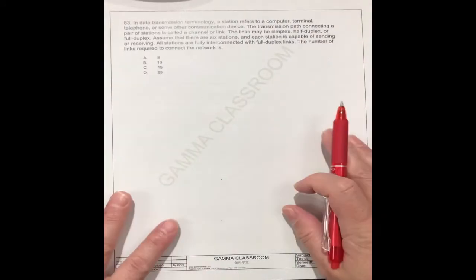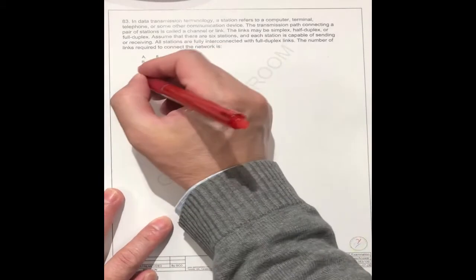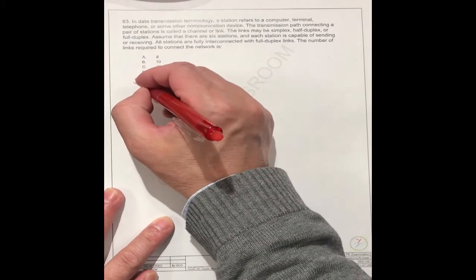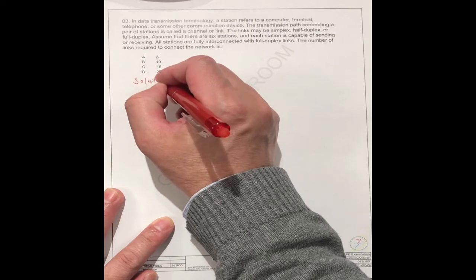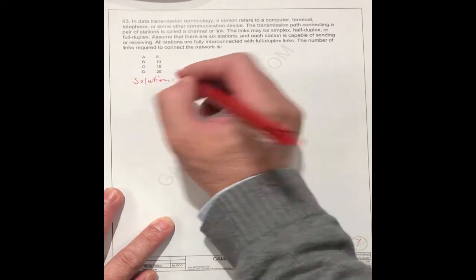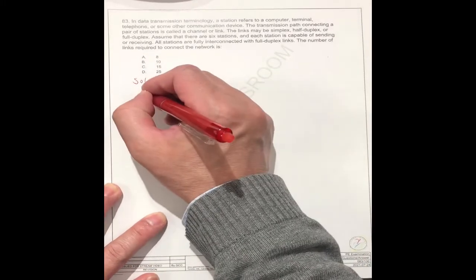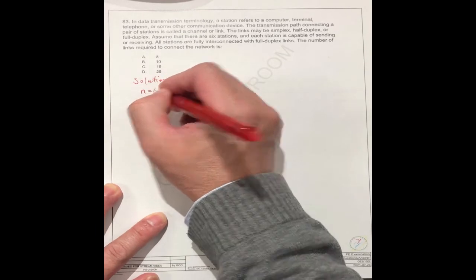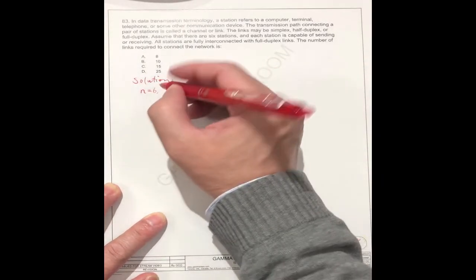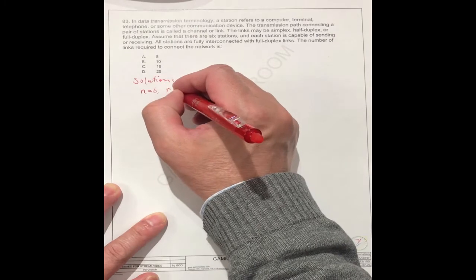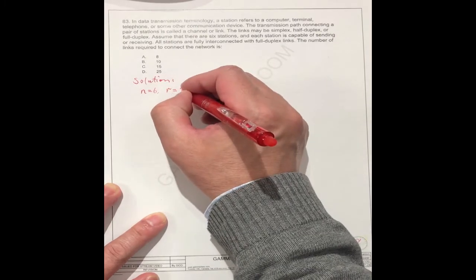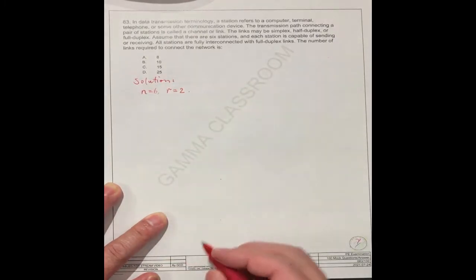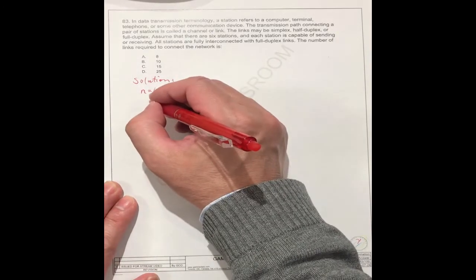So for this solution, we know the total number is equal to six. Any two stations connect together. So the total number is nCr equals C(6,2),